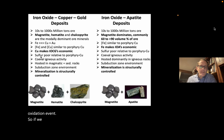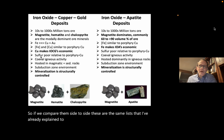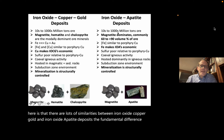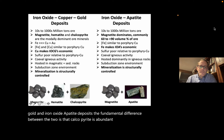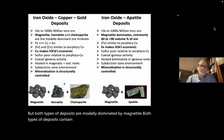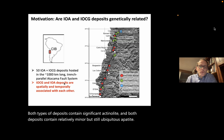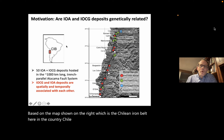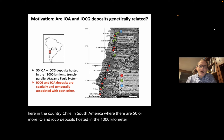Comparing them side by side, there are lots of similarities between iron oxide copper gold and iron oxide apatite deposits. The fundamental difference is that chalcopyrite is abundant in IOCGs, but both types are modally dominated by magnetite. Both contain significant actinolite and both contain relatively minor but ubiquitous apatite. Our group was motivated to study these deposits starting in 2013 based on the map of the Chilean iron belt, where there are 50 or more IOA and IOCG deposits hosted in the 1,000-kilometer-long trench-parallel Atacama fault system.